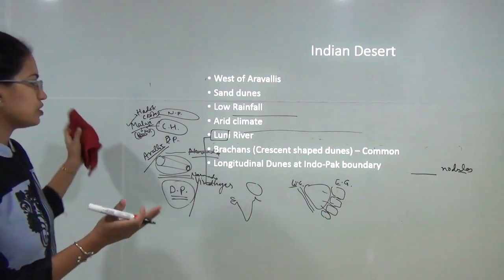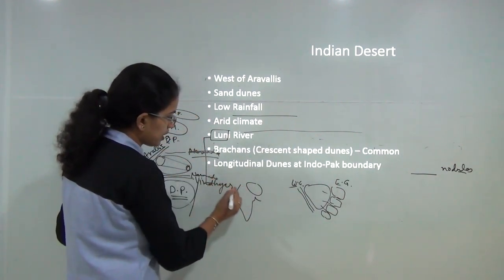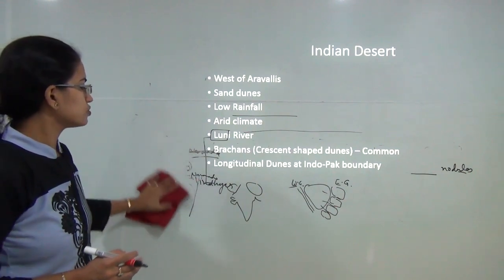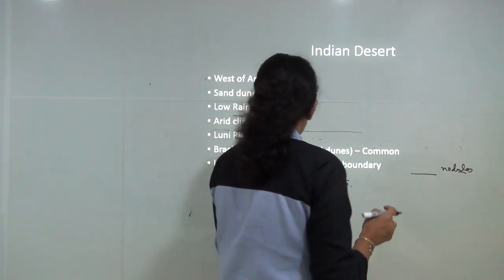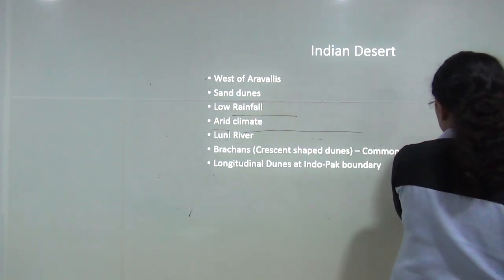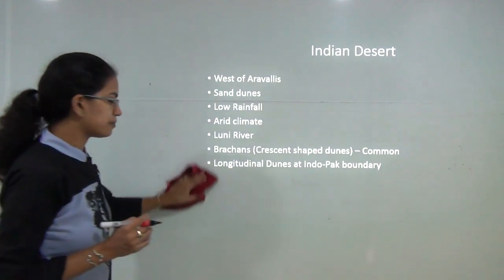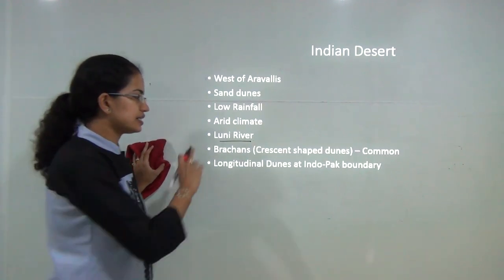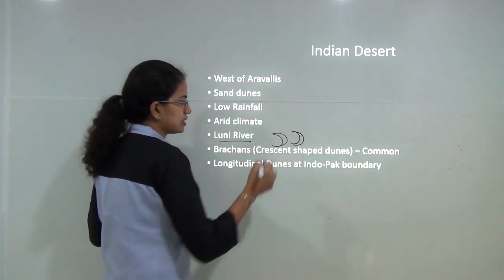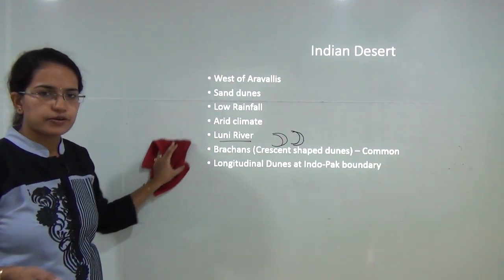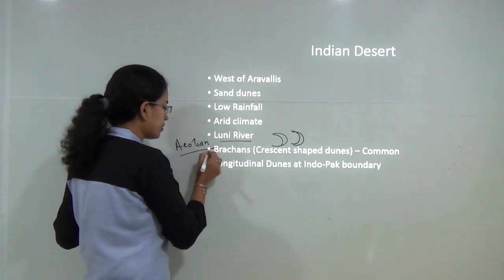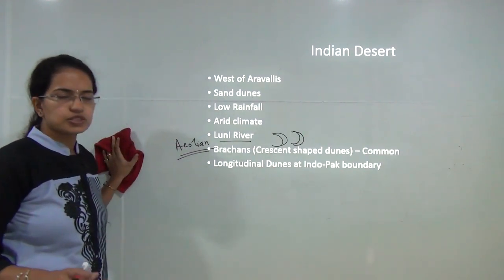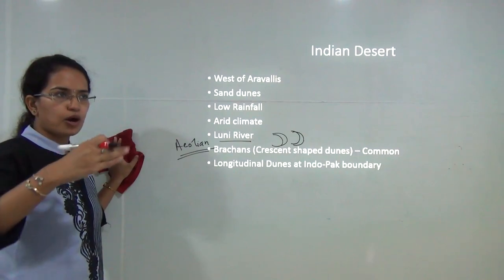The desert area lies to the west of the Aravalli range, covering most of western Rajasthan — known as the Indian desert or Thar desert. It is known for sand dunes and has an arid climate with less rainfall. The only river that flows into this region is the Luni river. Most of the desert area has crescent-shaped dunes known as Barkans, as covered in Aeolian landforms. Towards the India-Pakistan boundary, longitudinal dunes are also common.